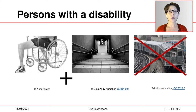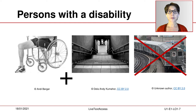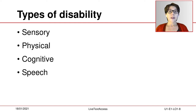A wheelchair user may not be able to participate equally in a daily basis activity such as travelling by train when the only access way is stairs. This example shows how environments can create barriers. In this case, we often talk about sensory, physical, cognitive and speech disabilities.